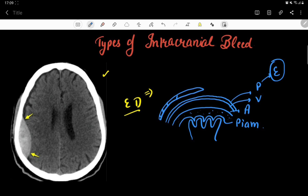The periosteum that lines the skull bone is the parietal layer of the dura mater, which is why it is also known as the endosteal layer. The dural venous sinuses are present between the parietal and visceral layers of the dura mater.